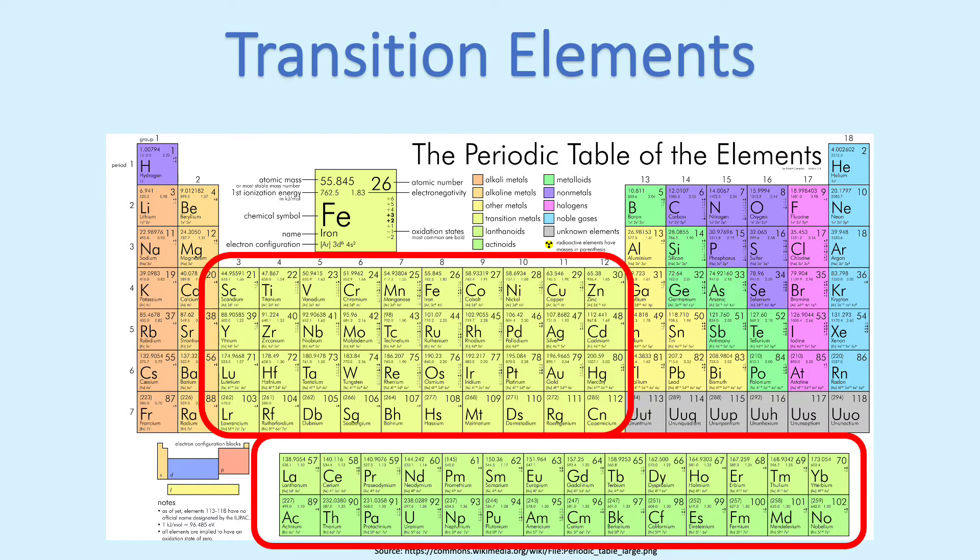Now, let's look at the center of the table. These are called the transition elements, or transition metals. This includes the two rows towards the bottom. The transition elements are special. They can carry multiple charges. For example, iron can exist as a plus two charge, or a plus three charge.